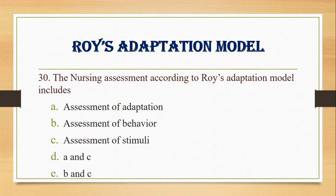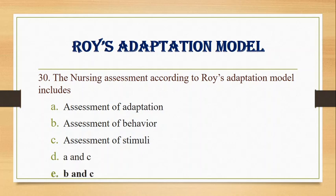Number 30. The nursing assessment according to Roy's adaptation model includes: A. Assessment of adaptation, B. Assessment of behavior, C. Assessment of stimuli, D. A and C, E. B and C. Answer: E. B and C. Nursing assessment according to Roy includes assessment of behavior and assessment of stimuli.